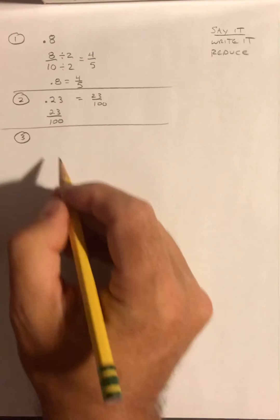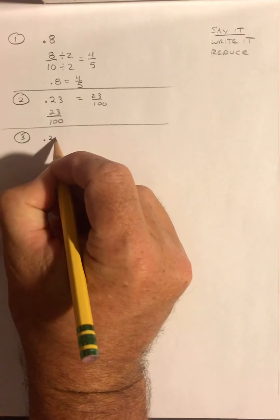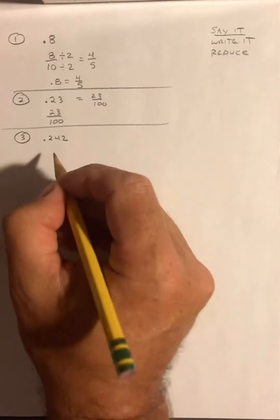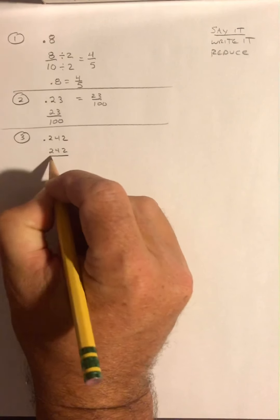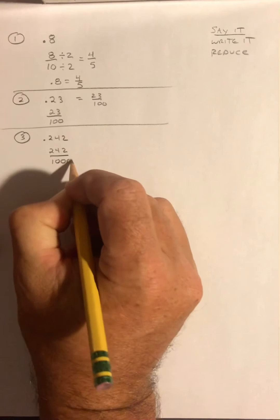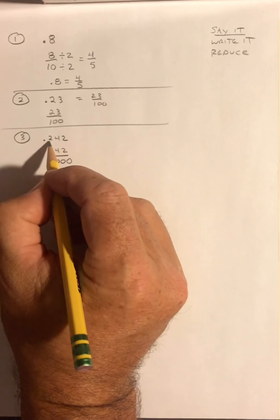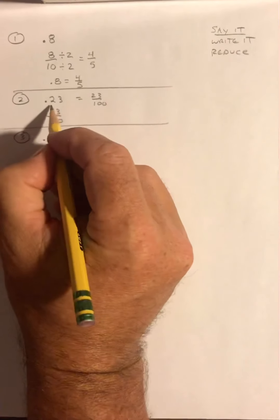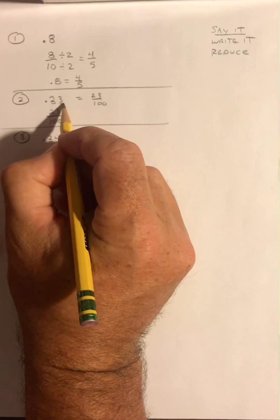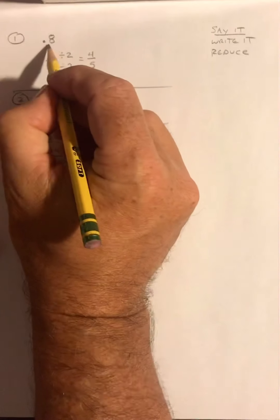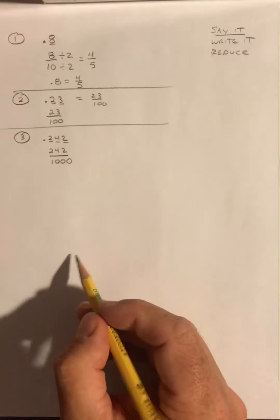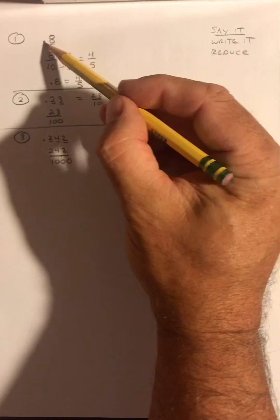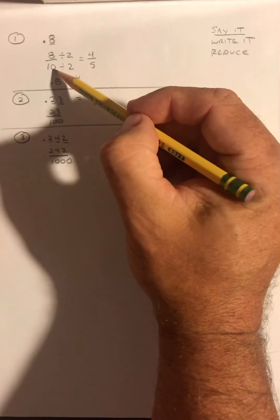Example three. 0.242. If I say that correctly, that is 242 thousandths. I'm getting the thousandths from the fact that these decimal places are tenths, hundredths, thousandths. This example only had tenths and hundredths, that's why I used hundredths. This one only had tenths. Another way you can look at this is however many decimal places past the decimal is the number of zeros in the denominator.